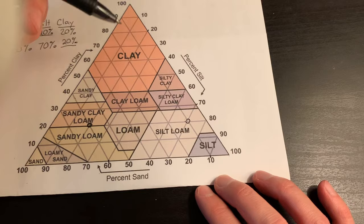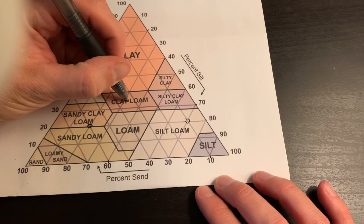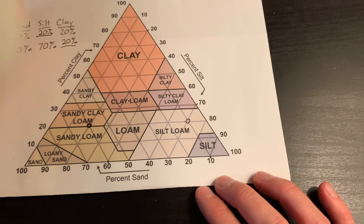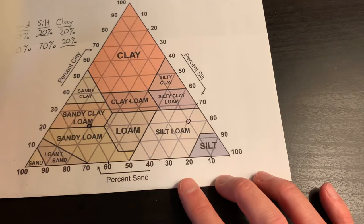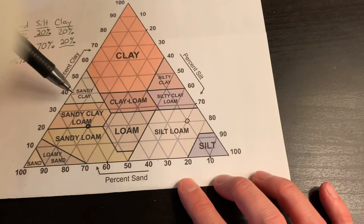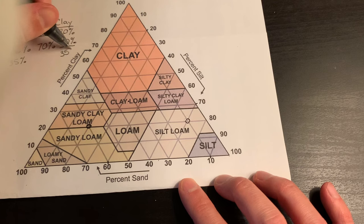We can work in reverse. If we want to know what is a clay loam right in the middle - it doesn't have to be on the line, it can be in the middle - we take a look and we can say a perfectly balanced clay loam would be about 35 percent sand and it would be about 35 percent clay.